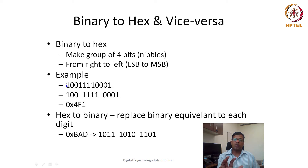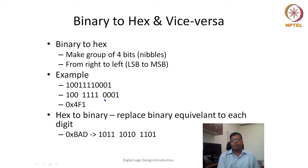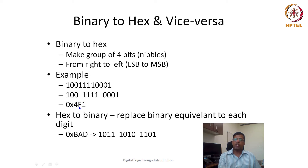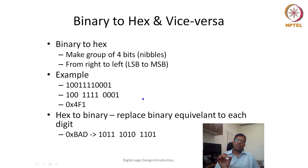If the last nibble has only 3 bits, we pad with a leading zero. Once the nibbles are formed, we use a lookup table. For example, 0 0 0 1 means 1 in hex, 1 1 1 1 is 15 and 15 in hex is F, and 1 0 0 0 is 8 — wait, actually 0 1 0 0 is 4, so we write 4. So the hex representation of this binary number would be 0x4F1.